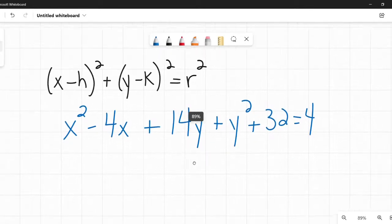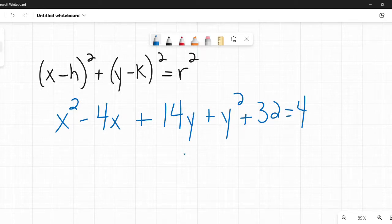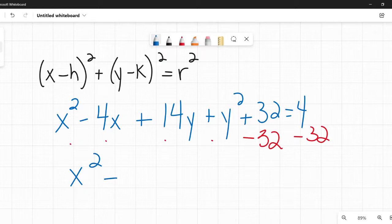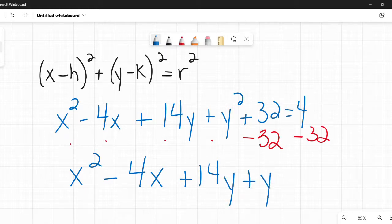All right. So first step, and now I'm assuming that you all know what completing the square is. So first step here, you're going to get any numbers that are all by themselves over to the other side. You're going to get them all on one side and you're going to have all of the X's and Y's on the other side. So the only one I have as a plain number is that 32. So I'm going to subtract 32 from both sides. And I have left on the left side, x² - 4x + 14y + y² = 4 - 32 or -28.